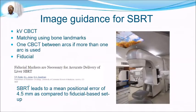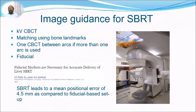The image guidance used for SBRT at CMC Vellore is kV CBCT, with matching using bony landmarks. One CBCT between arcs is recommended when more than one arc is used in VMAT or IMRT. Implanting fiducial markers can further improve accuracy; one paper notes that fiducials are necessary for accurate liver SBRT delivery, though this is an additional procedure requiring the appropriate facility.